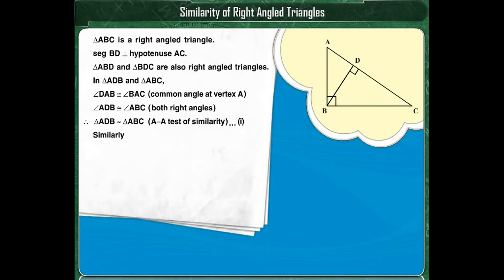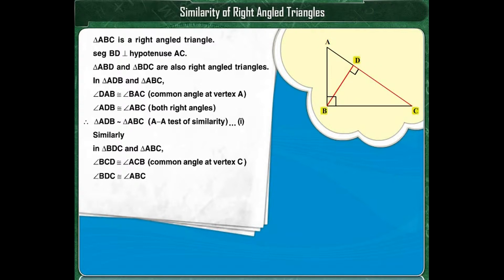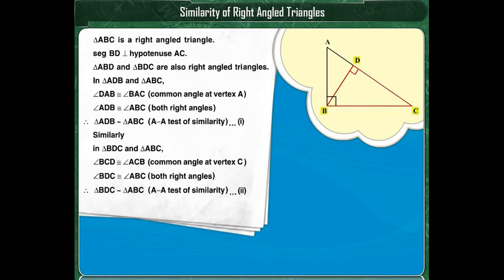Similarly, in triangle BDC and triangle ABC, angle BCD and angle ACB are congruent, being the common angle made at vertex C. Angle BDC and angle ABC are congruent, both being right angles. Hence, by the AA test of similarity, triangle BDC and triangle ABC are similar triangles.